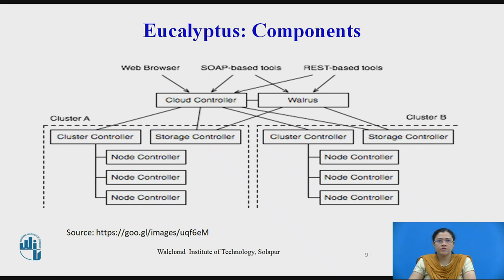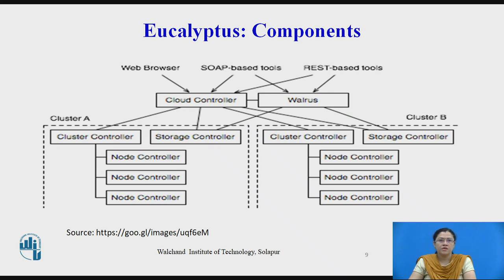The first component is the Cloud Controller (CLC). It offers EC2-compatible interfaces as well as a web interface to the outside world. In addition to handling incoming requests, the CLC acts as the administrative interface for cloud management and performs high-level resource scheduling, system accounting, etc. Only one CLC can exist per cloud, and it handles authentication, accounting, reporting, and quota management.